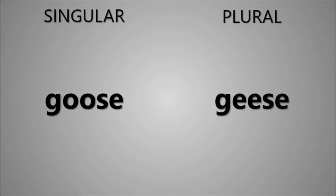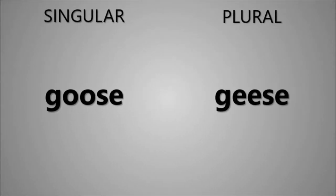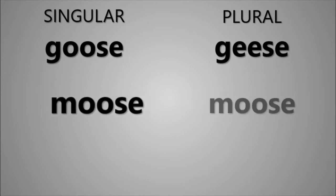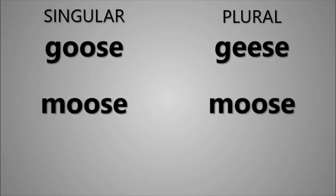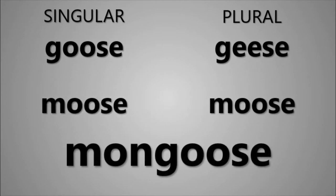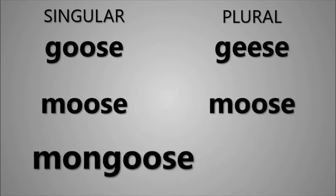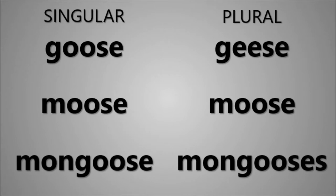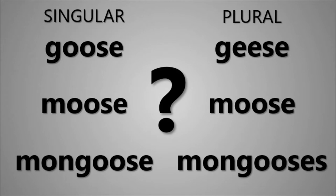The plural of goose is geese. The plural of moose is moose. The plural of mongoose is mongooses. It's stuff like this that makes the English language so confusing. In this video, I'll explain how the three different plurals came about.